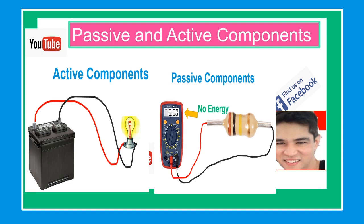Common examples of active components include voltage sources, current sources, generators, alternators, and all different types of transistors such as FET or field effect transistors, bipolar junction transistors, MOSFET, and JFET or junction field effect transistors. Also diodes like silicon, zener, photodiodes, and LED or light emitting diodes.